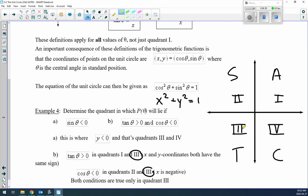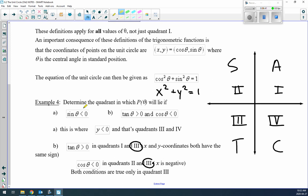Here's our unit circle and our all-students-take-calculus method. This tells you where things are positives and negatives. Example 4: Determine the quadrant in which P(θ) will lie if sine is less than zero, which means sine is negative. Where is sine negative? Sine is negative down in quadrants 3 and 4.